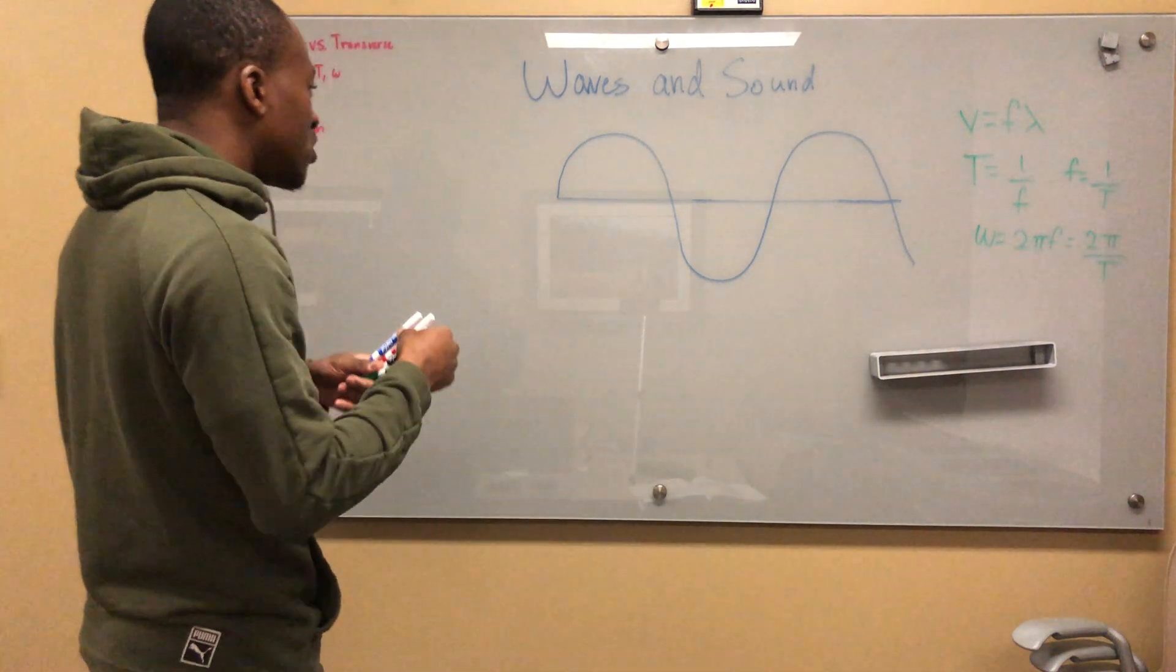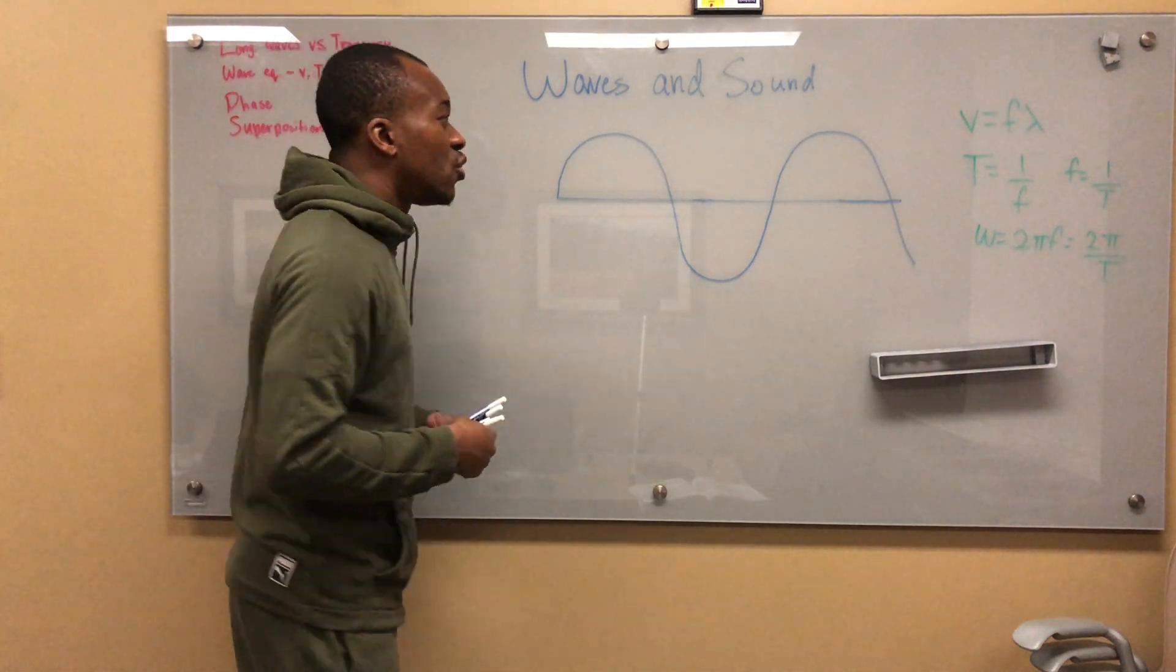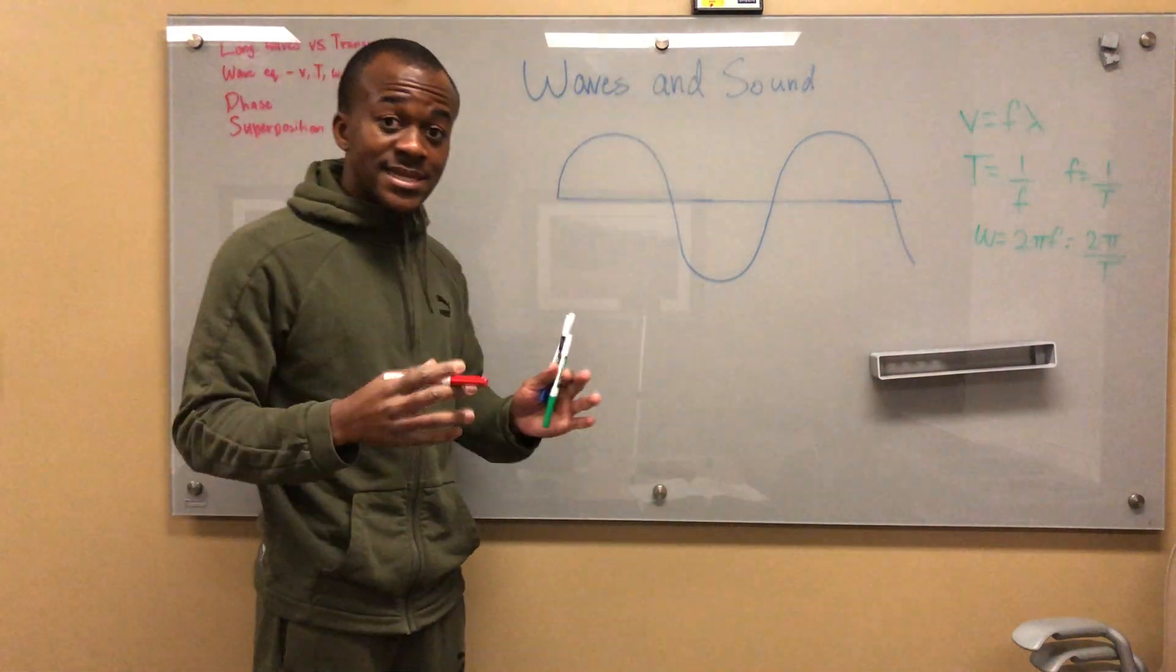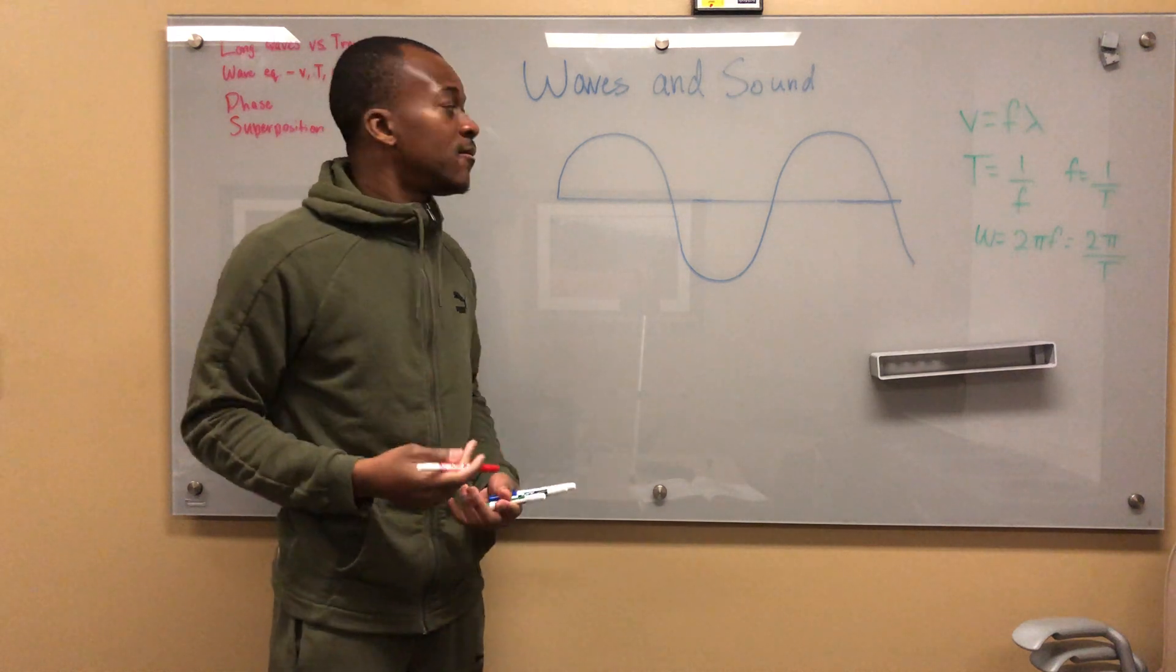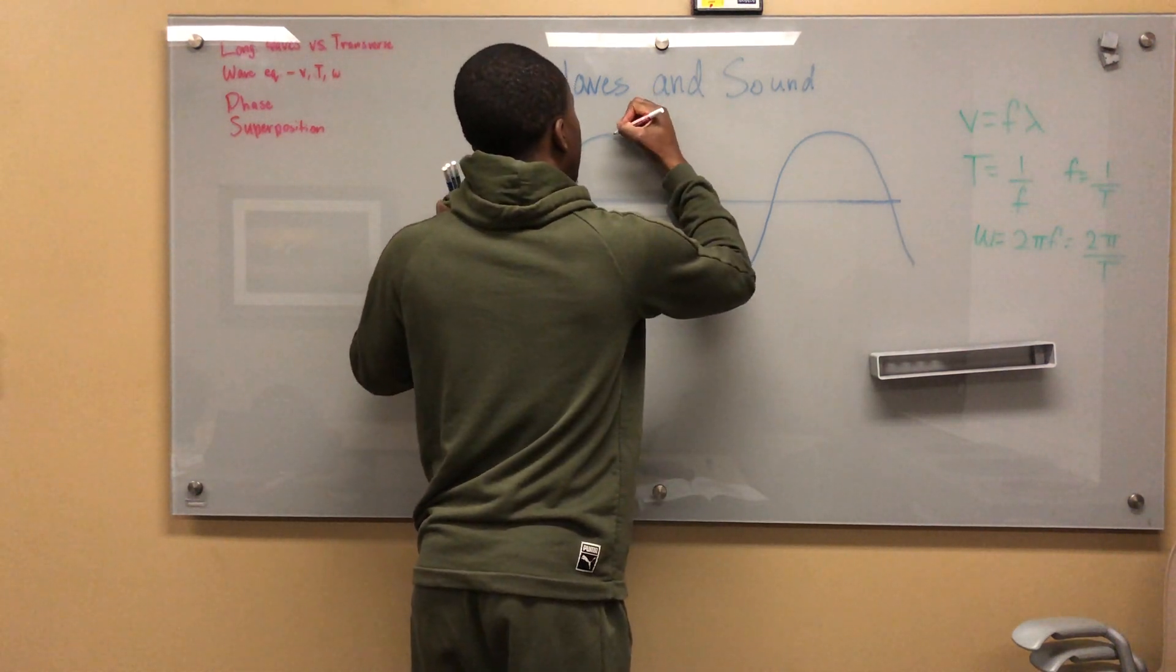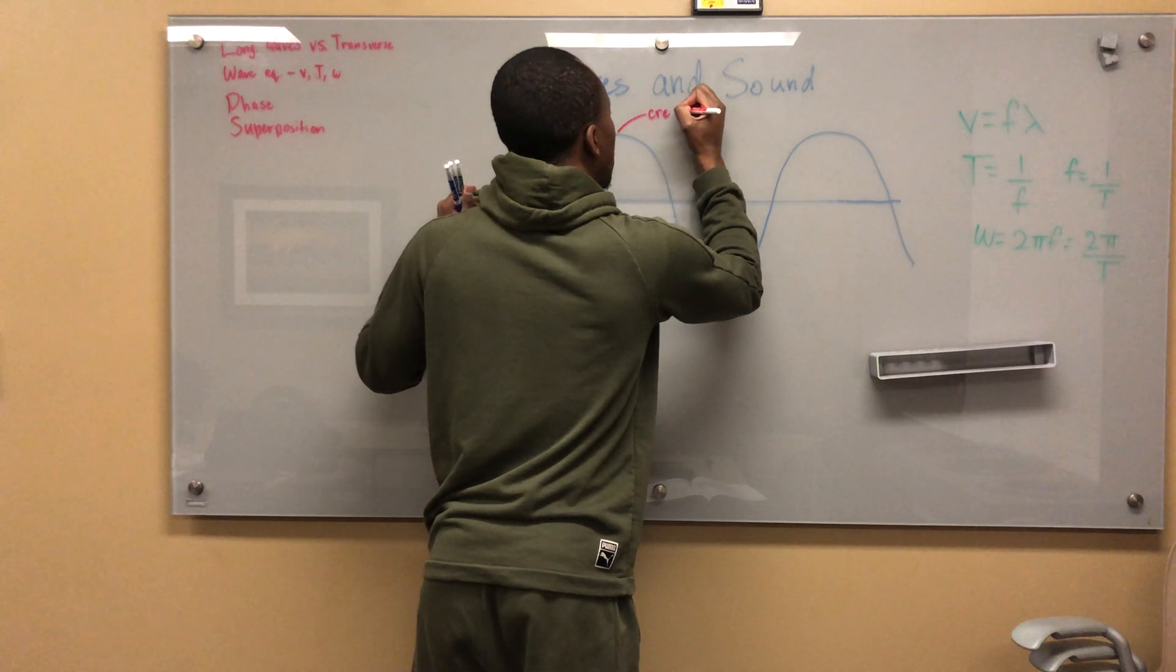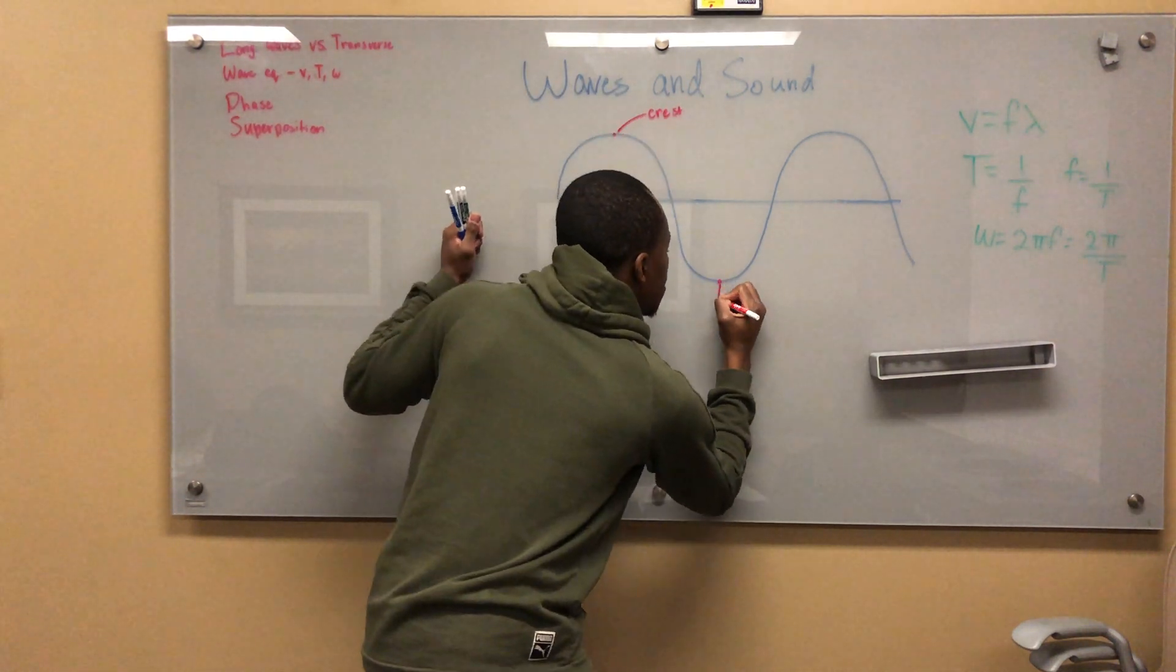I want to talk about the parts of a wave. Wavelength is basically a distance - it's the distance between two successive crests. I want to talk about what this point right here would be called. This right here is a crest, and this right here is a trough.